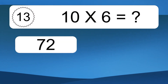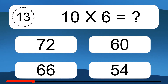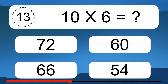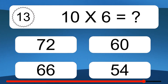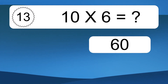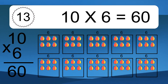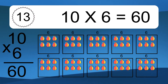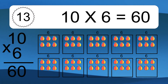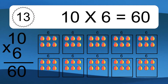10 times 6 equals what? 10 times 6 equals 60. We have 10 boxes, and each box has 6 colorful balls inside. If you count all the balls in all the boxes together, you will have 10 times 6 balls. This equals 60 balls.